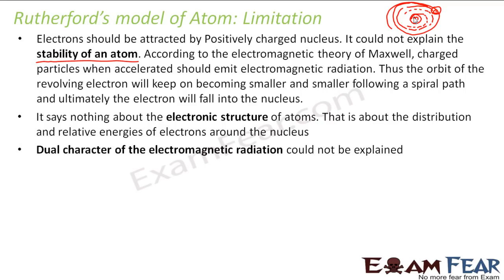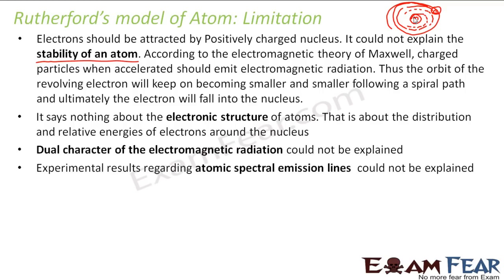The dual nature of electromagnetic radiation could not be explained. Several experiments proved that dual nature of radiation is true - that every particle can behave as a particle as well as a wave. But Rutherford's model could not explain this. Also, experimental results regarding atomic spectral emission lines could not be explained. Rutherford's model could not explain why these spectral lines occur.